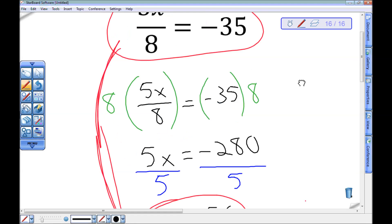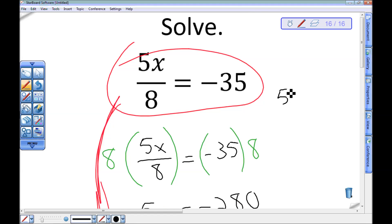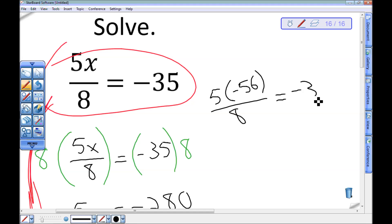So now let's make sure that that's right. x is negative 56. 5 times negative 56 divided by 8. I want to know, is that negative 35? Well, negative 56 divided by 8 is negative 7, and negative 7 times 5 is negative 35. Alright, we got it. Negative 56 is a solution of 5x over 8 equals negative 35.